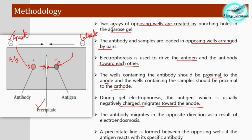Consider why the antigen is considered negatively charged and placed near the negative electrode. The antibody migrates in the opposite direction as a result of electro-endo osmosis. Through this phenomenon, the antibody migrates toward the antigen. A precipitate line is formed between the opposing wells if the antigen reacts with the specific antibody, indicating a positive result.